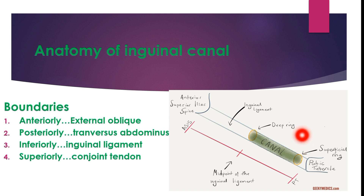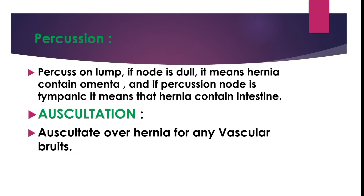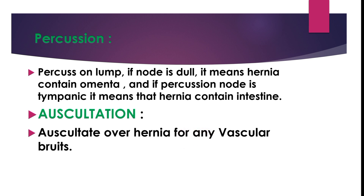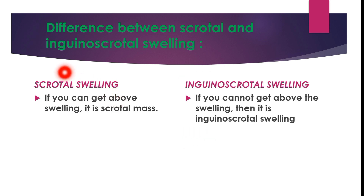The third step in hernia examination is percussion. Percuss over the lump — if the note is dull, it means the hernia contains omentum; if the percussion note is tympanic, it means the hernia contains intestine. The fourth step is auscultation. Auscultate over the hernia for any bowel sounds using a stethoscope.